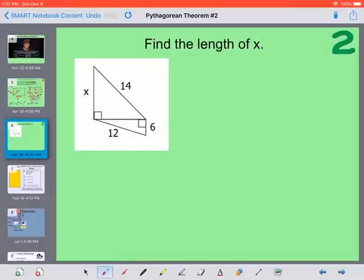The next one, we actually have two triangles here that are both right triangles. We need to look at one at a time. So I'm going to focus on this triangle down here first. It says find the length of x.